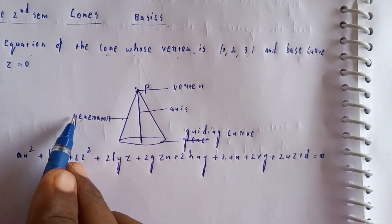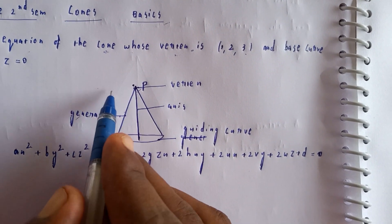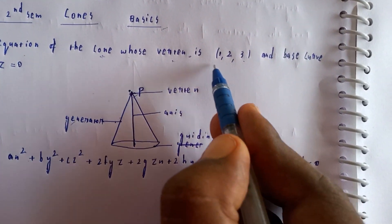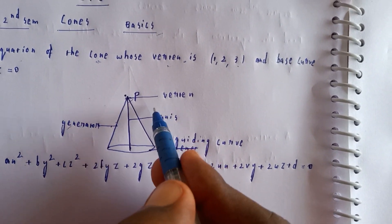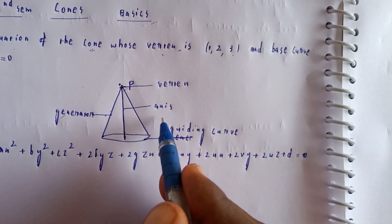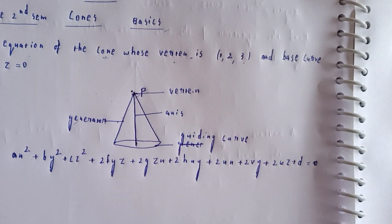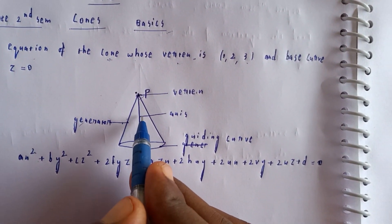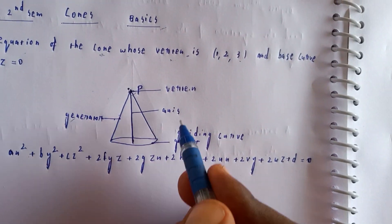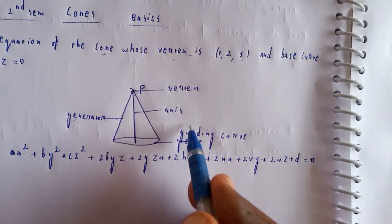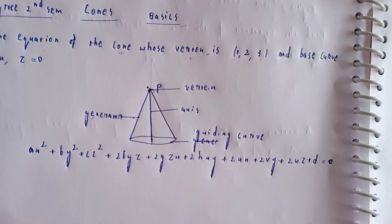We already have the generator formula. The equation of the generator for a cone with vertex at a given point involves two triangles on either side. The generator rotates around the axis, tracing the guiding curve shape.